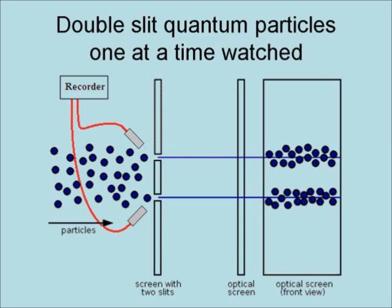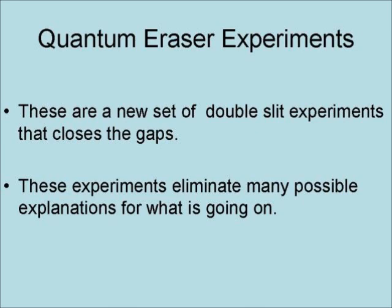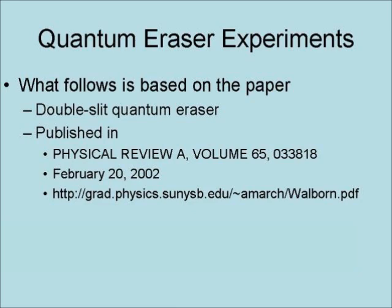So it is the act of observing — specifically the recording of information — that affects the experiment, not the measuring devices themselves. The quantum eraser experiments are a new set of double-slit experiments that close this gap. These experiments eliminate many possible explanations for what is going on. What follows is based on the paper 'Double Slit Quantum Erasure,' published in Physical Review on February 20, 2002.